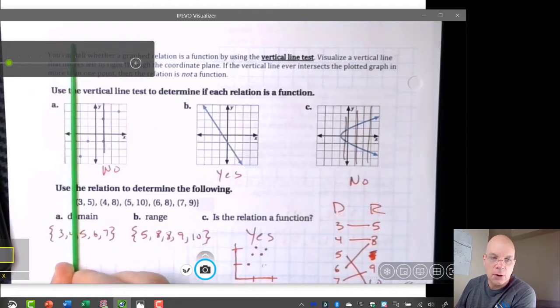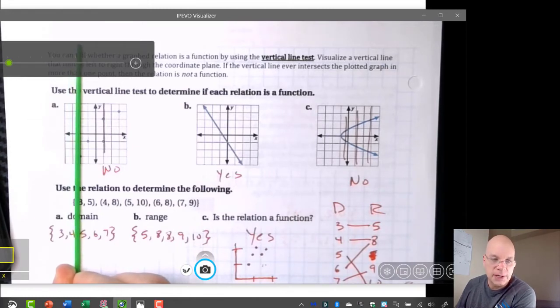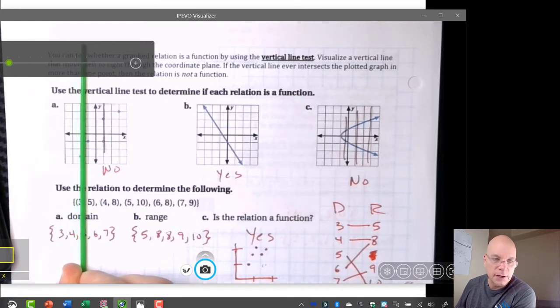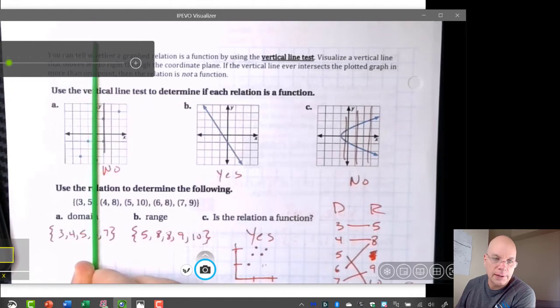So right now it's intersecting no points in the relation, but as soon as I move it here, it's going to intersect that one point, that one little blue dot. And I move it over here, it's intersecting this blue dot.